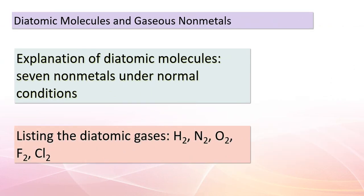Let's dive deeper into the molecular world of non-metals. Under ordinary conditions, seven non-metals exist as diatomic molecules, meaning they naturally bond together in pairs. These diatomic gases include hydrogen (H₂), nitrogen (N₂), oxygen (O₂), fluorine (F₂), and chlorine (Cl₂). Surprisingly, there's even a non-metal that exists as a diatomic liquid — bromine (Br₂) — and another as a volatile solid — iodine (I₂).